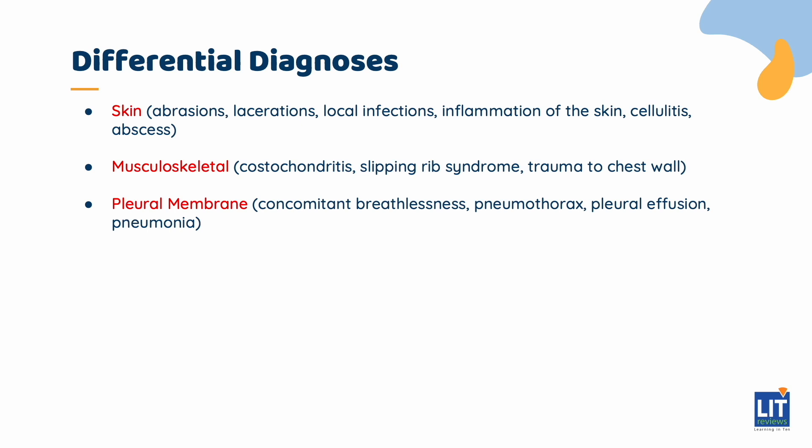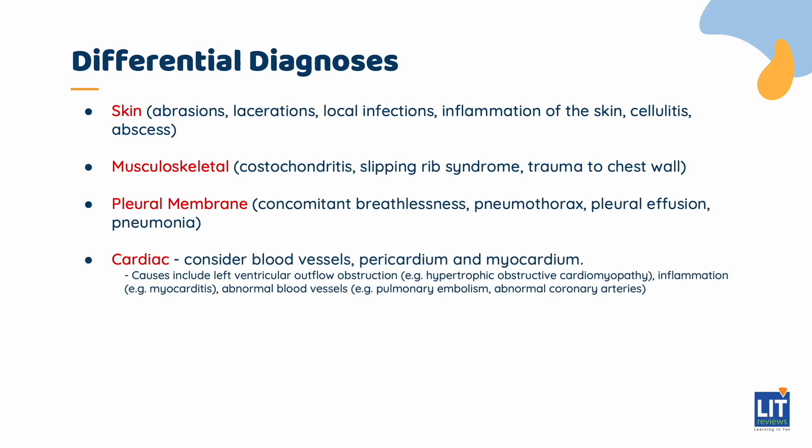Next, we look at the pleural membrane, which is the lining that surrounds the lungs. These conditions are usually associated with concomitant breathlessness. We should consider differentials like pneumothorax, which can be spontaneous or trauma-induced, or pleural effusion and pneumonia. Moving on to cardiac causes, we should consider the blood vessels, pericardium, and myocardium. There can also be structural defects that affect the left ventricular outflow tract, such as hypertrophic obstructive cardiomyopathy and aortic stenosis. We should also consider inflammatory causes such as myocarditis and pericarditis. For blood vessels, we consider pulmonary embolism, which refers to obstruction of the vessels. In rare cases, we need to think about life-threatening causes such as aortic dissection or ruptured aortic aneurysm.